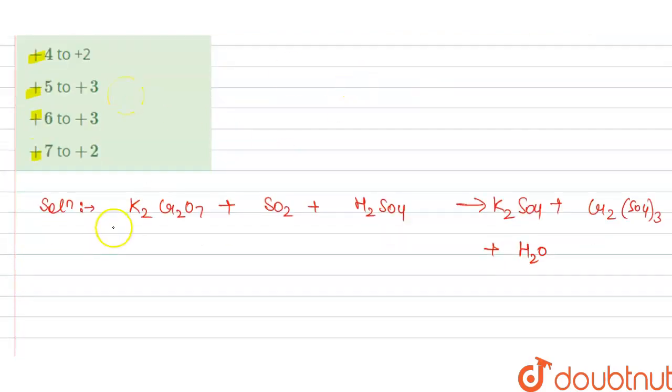So we know that potassium is +1, multiplied by 2, so this is +2. Let's suppose chromium is 2x, so this is 2 times 2x, and oxygen is -2 multiplied by 7, that is -14. So we have 2x equals 12, so we get x is +6.